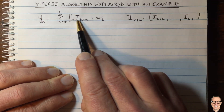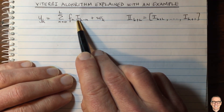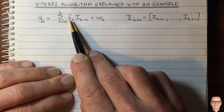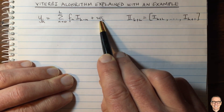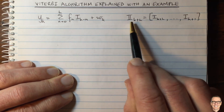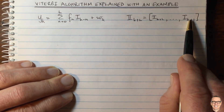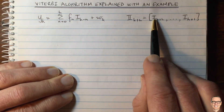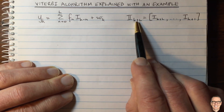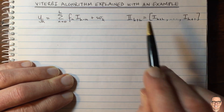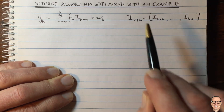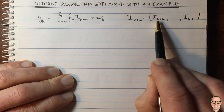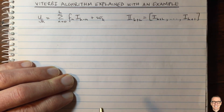Here, I represents the digital data, either 0s or 1s. The channel taps are given by F, and W is white Gaussian noise. We're going to define this vector here of data symbols for the inter-symbol interference. So this is I_k through I_{k+L}, where capital L is the number of taps of inter-symbol interference, and it is given by this vector here.